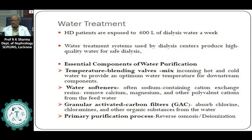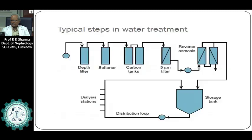The blood is continuously running into the dialyzer and back into the patient. The other compartment is the dialysate compartment in which dialysate is continuously running, and across the semi-permeable membrane diffusion and ultrafiltration occur. This is how waste products, excess water, and excess salt are removed from the body. This is one of the hemodialysis machines, in which the filter, tubing, and machine are connected to the vascular access.